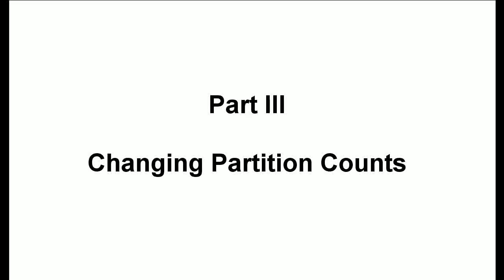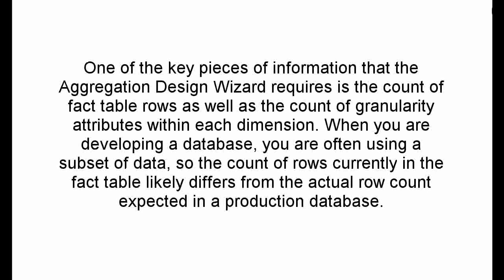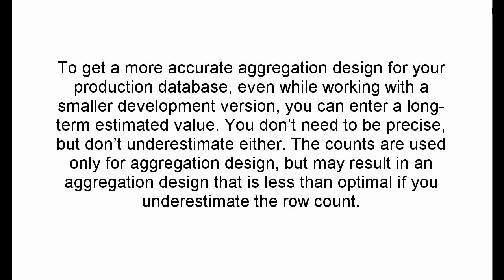Part 3: Changing Partition Counts. One of the key pieces of information that the aggregation design wizard requires is the count of fact table rows as well as the count of granularity attributes within each dimension. When you are developing a database, you are often using a subset of data, so the count of rows currently in the fact table likely differs from the actual row count expected in a production database. To get a more accurate aggregation design for your production database, even while working with a smaller development version, you can enter a long-term estimated value. You don't need to be precise, but don't underestimate either. However, the counts are used only for aggregation design, but may result in an aggregation design that is less than optimal if you underestimate the row count.